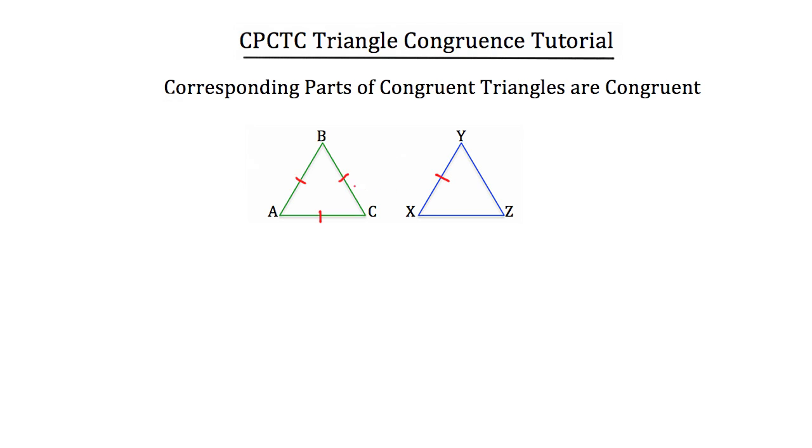So I'll mark each of these sides as congruent with another side on the other triangle and you can see that these two triangles are congruent. They're congruent as triangle ABC is congruent to triangle XYZ.